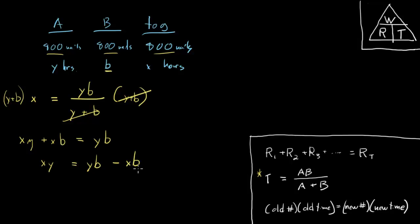So progress. Now all the B's are on the same side, but there's still the problem that there are two B's and I want just one B isolated by itself. So I can get just one B by factoring that B out of each of these terms, and that leaves me with B times Y minus X. If I factor the B out of each of these, it just leaves me with Y and X. This side is still XY.